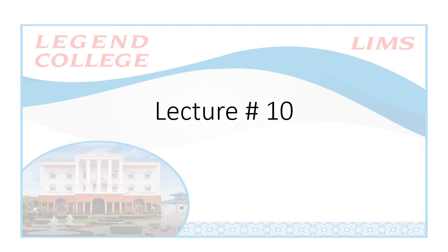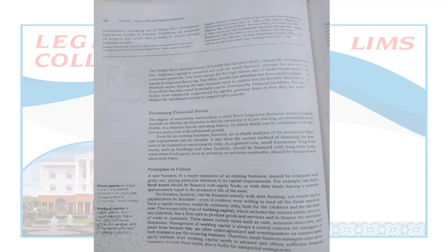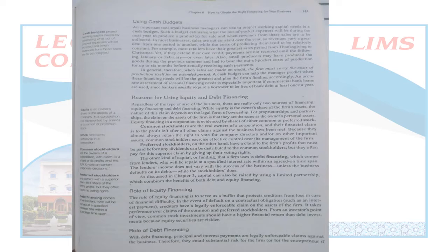We will discuss with respect to the previous lecture. In those sessions we covered how to obtain the right financing for your business. We went through all of the contents: estimation of financial needs, principles to follow, using cash budgets and debt financing, and how common and preferred stockholders differ. We talked about the role of equity financing and the role of debt financing in businesses.